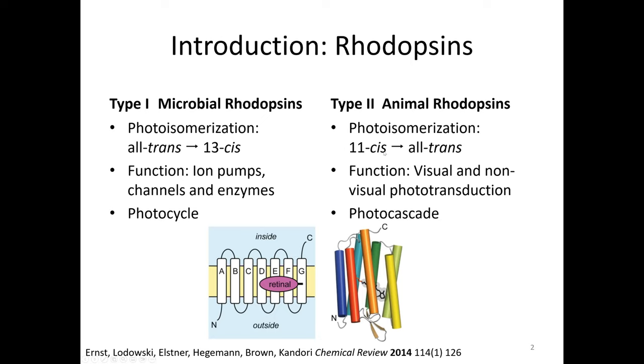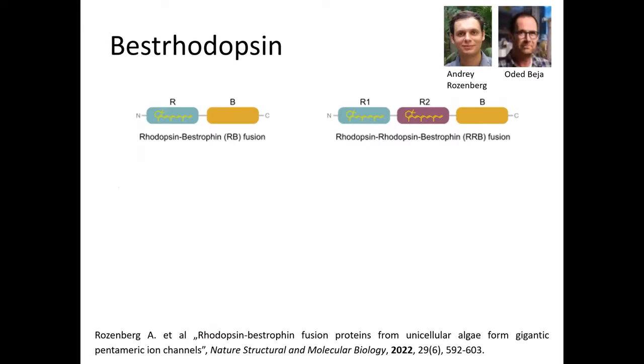The second type is called animal rhodopsins. They have a different function - they are responsible for visual and non-visual photo transduction. In this type of rhodopsin, the chromophore retinal is present in the 11-cis conformation and then it's converted to all-trans. In contrast to microbial rhodopsins, it doesn't undergo a photo cycle. Instead it shows a photo cascade, meaning there's a series of chemical transformations and at the end it does not regenerate the 11-cis. Instead, the retinal is cleaved and it leaves the protein binding pocket.